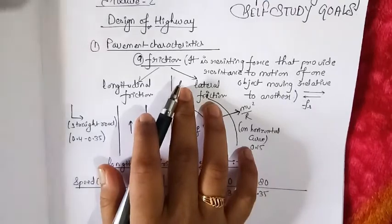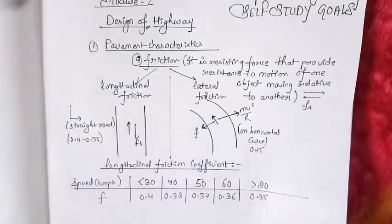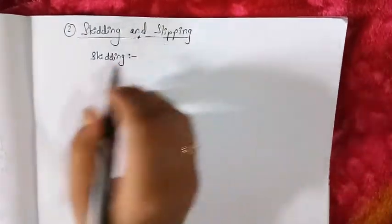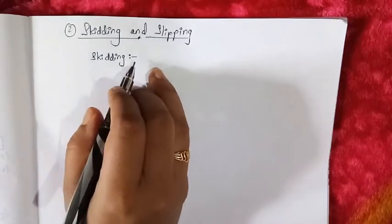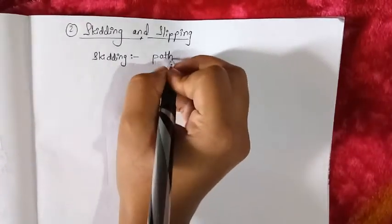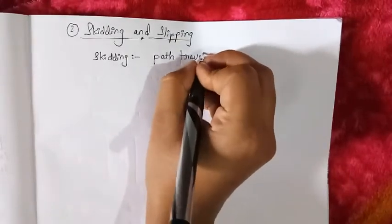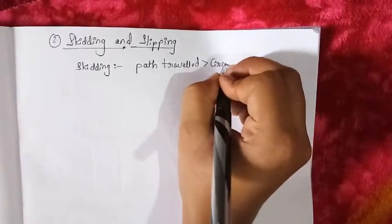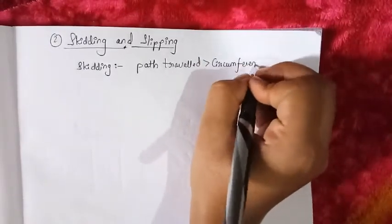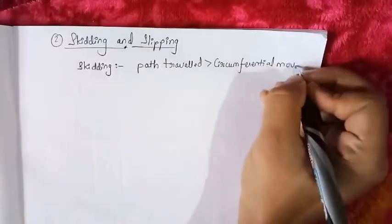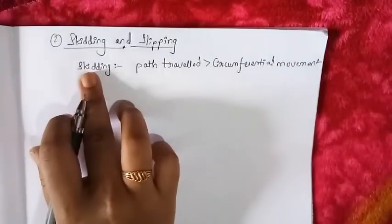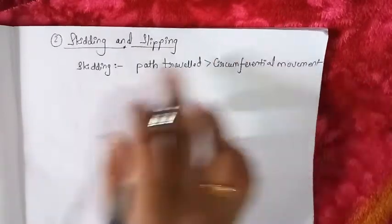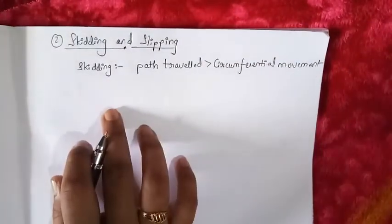Next we will see the second part of pavement characteristics, that is skidding and slipping. First, what is skidding? Skidding occurs when the path travelled by the wheel is greater than the circumferential movement of the wheel.